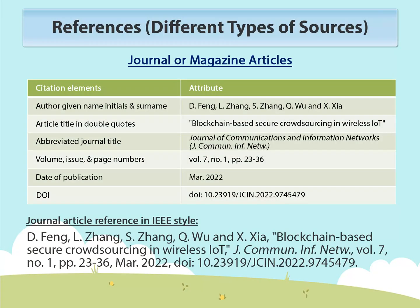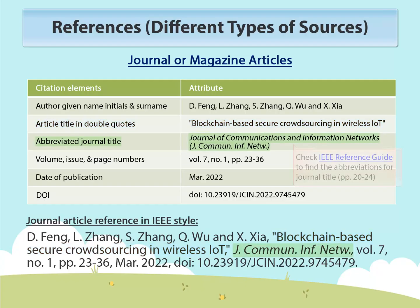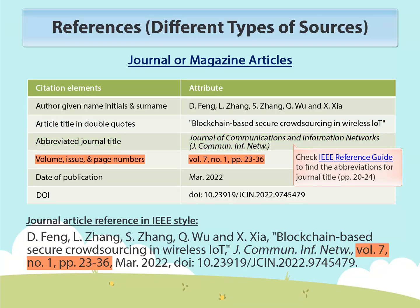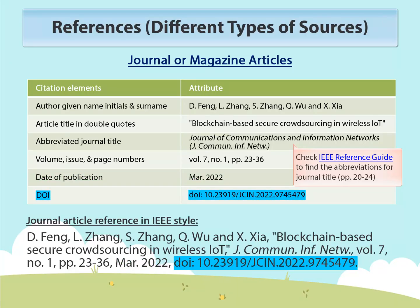Now let's take a closer look at references for journal or magazine articles. The basic elements of a journal article include author name, article title, abbreviated journal title, volume, issue, page numbers, date of publication, and digital object identifier.